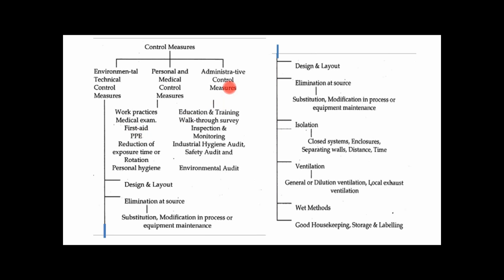Administrative control measures include education and training, walk-through survey, inspection and monitoring, industrial hygiene audit, safety audit, and environmental audits. With the help of these audits we can go for inspections and observations for special areas where environmental factors or stresses are more. Specific training should be given — for example, if there is a possibility of chemical attack, we must go through training on chemical hazards, how to handle toxic or hazardous chemicals, and how to reduce exposure time in that working environment.